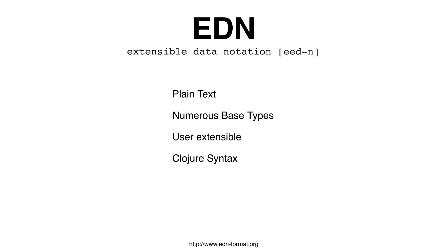Communication with Datomic is done with ordinary data structures, and EDN is how these data structures are represented as text. EDN has numerous base types, is user extensible, and is built upon Clojure syntax.